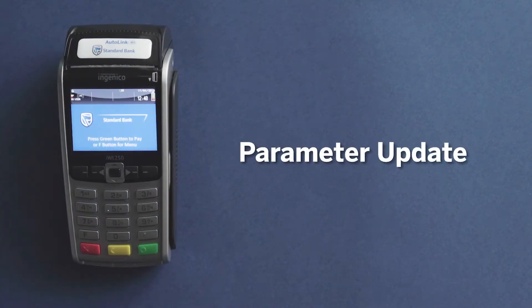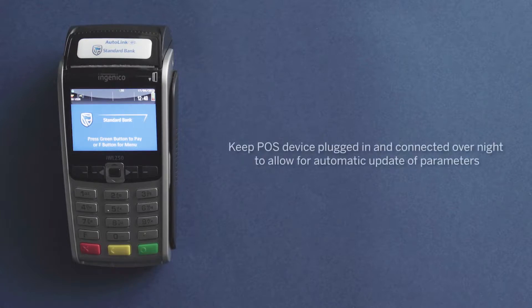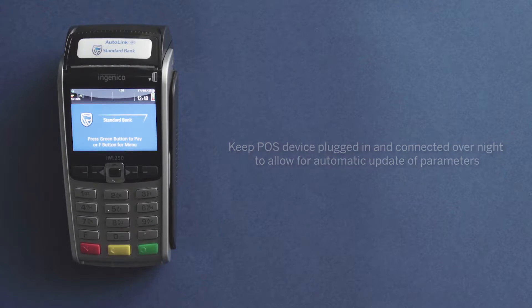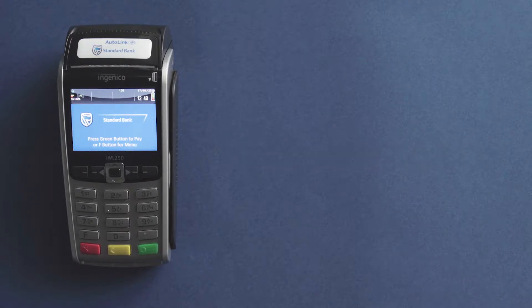Parameter Update. All AutoLink devices are set to automatically download parameters overnight. This is why it is very important that your AutoLink device remains plugged in to its charging base and connected.